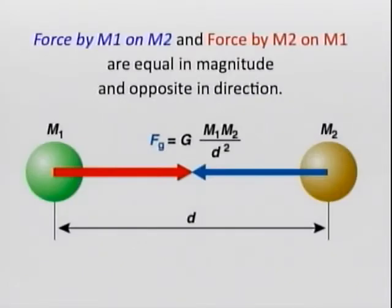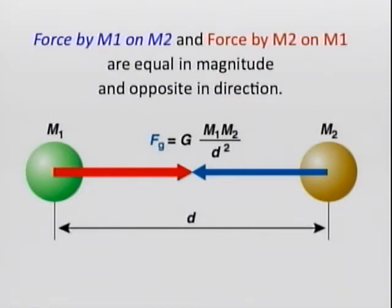For example, the force of gravity — the most important force in astronomy. You have two objects, mass 1 and mass 2, that are attracted to each other due to gravity. The force by mass 1 on mass 2 is represented in blue, and the force by mass 2 on mass 1 is represented in red. Notice that the force depends on the product of the masses and the distance between them. So if you compute the force by mass 1 on M2, or by mass 2 on M1, they're the same.